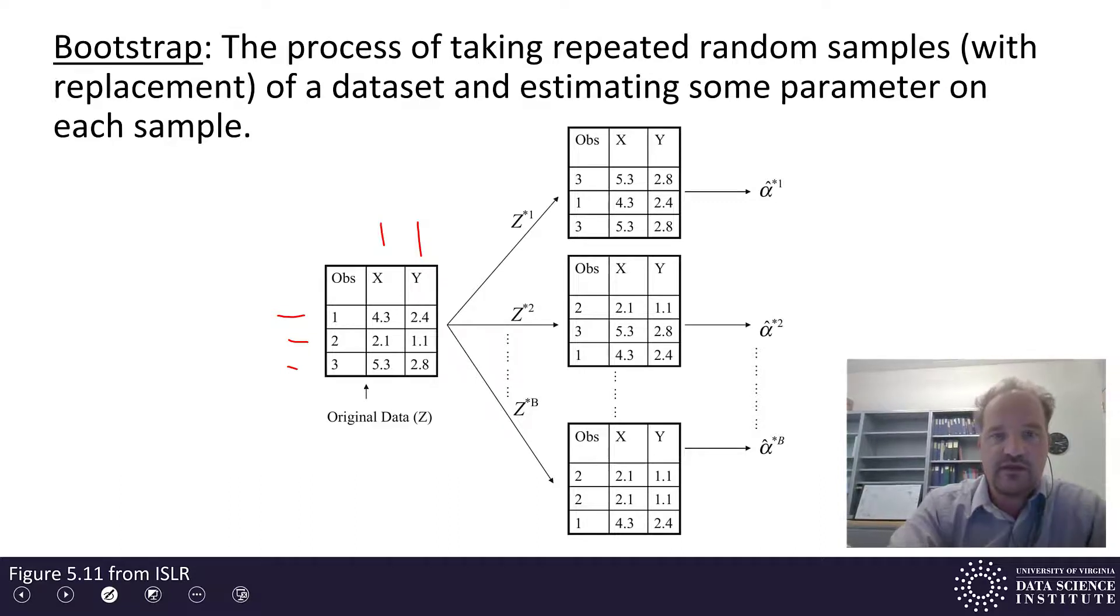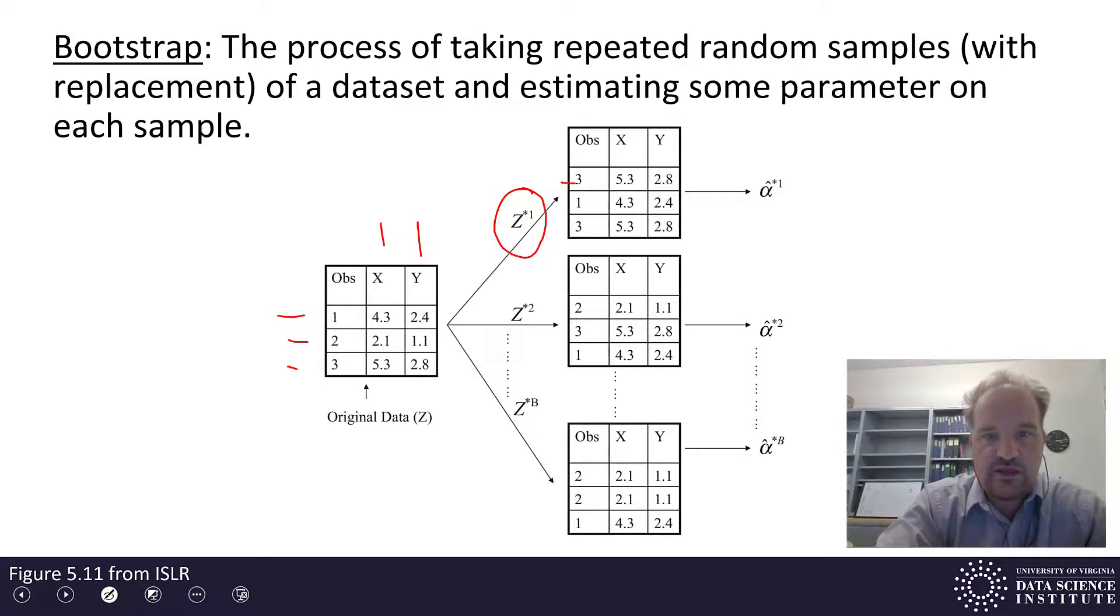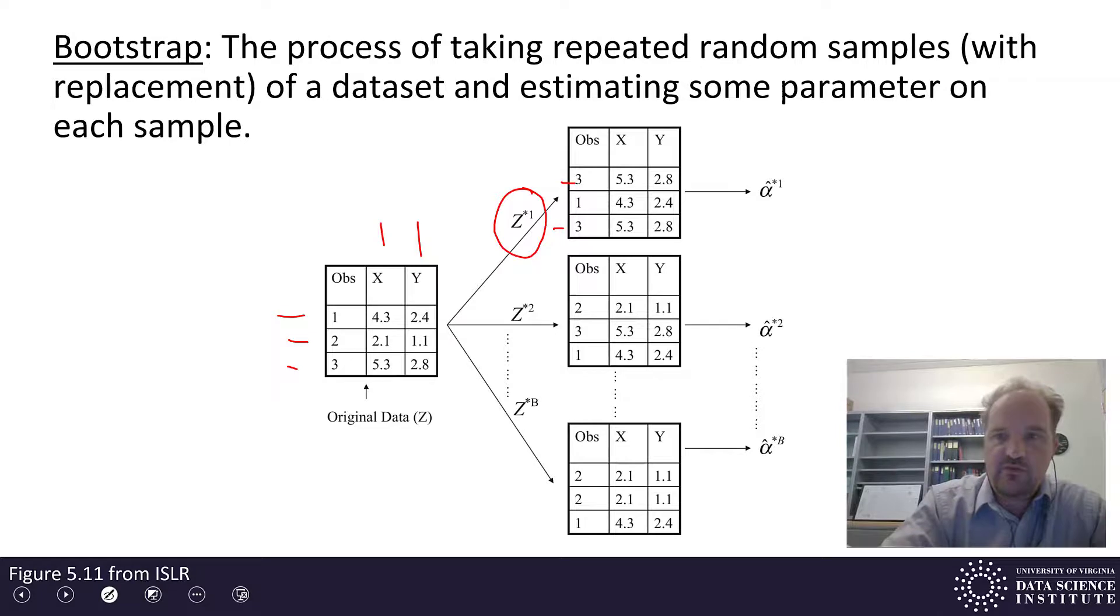And then we take a first subset, which is in this notation z1 or z star with an exponent 1, and notice it has the random sample here is taken with replacement. So we have three, and then we have another three in this random sample, and then we estimate some parameter alpha hat with a superscript star 1 to say this is the alpha hat estimate from the first data set.